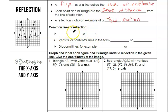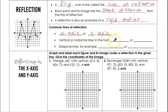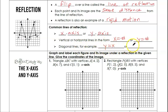Talking about lines of reflection, some of the common lines of reflection: the x-axis or the y-axis, those are the ones we primarily dealt with back in Lesson 1-7. You can also have vertical lines in the form of x equals some constant, and horizontal lines in the form of y equals some constant. And then you could also have diagonal lines like y equals x or y equals negative x, which we'll deal with later in this lesson.